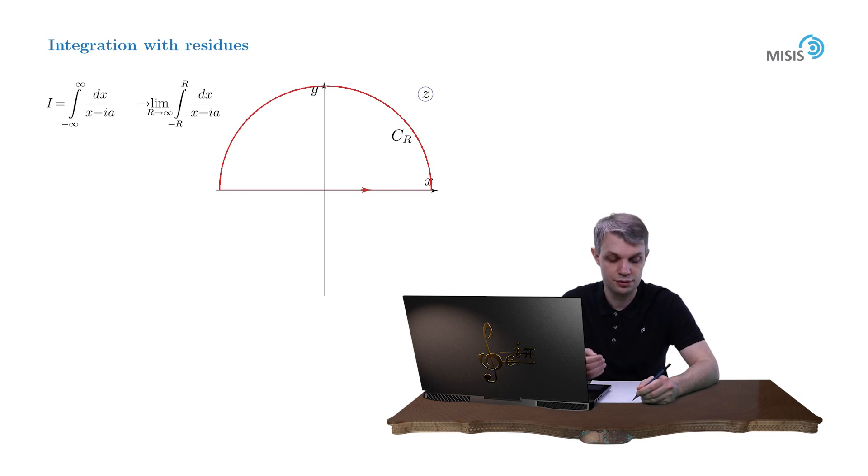Our integral promoted into a complex plane becomes an elementary function 1 over z minus ia. And as usual, when we estimate the integral over an arc, we use just the asymptotics of this function, which is 1 over z. So the function decays at large z, and we assume that our arc integral also vanishes. But now let's be a little bit more cautious.